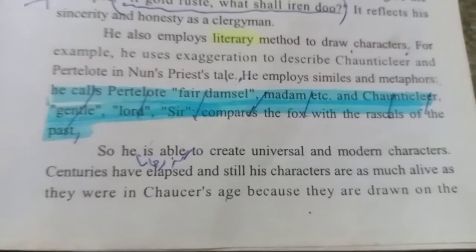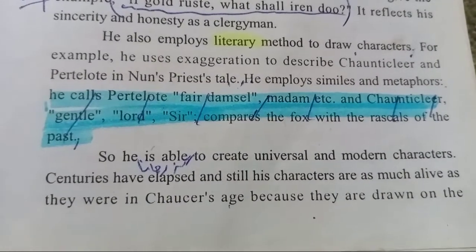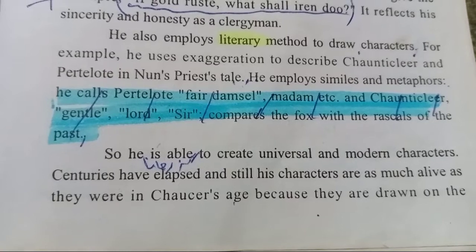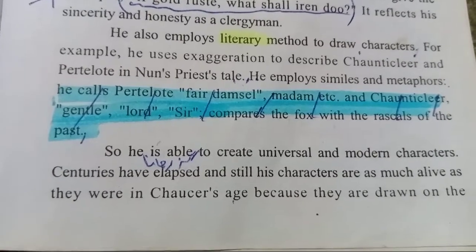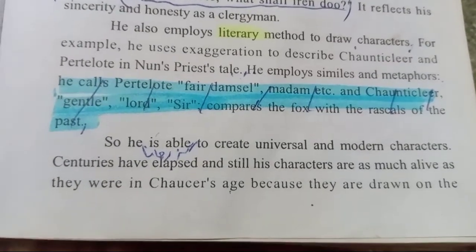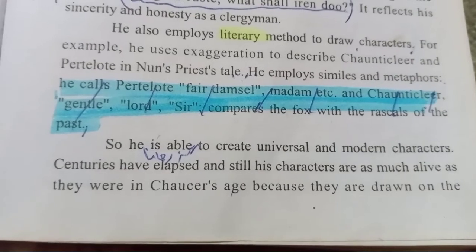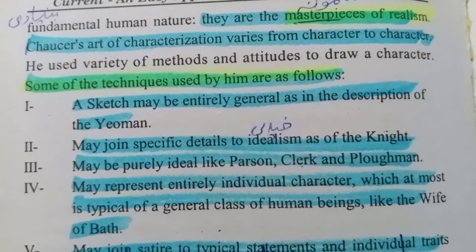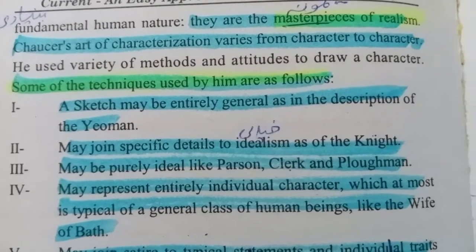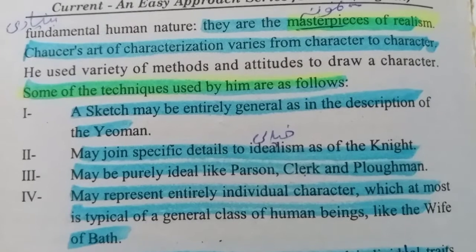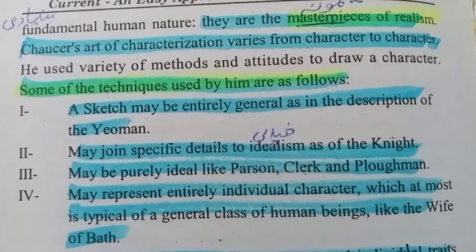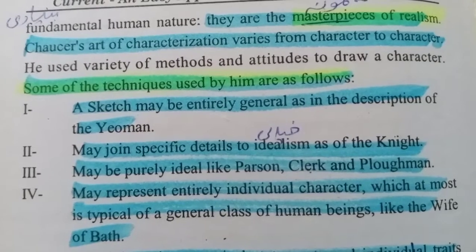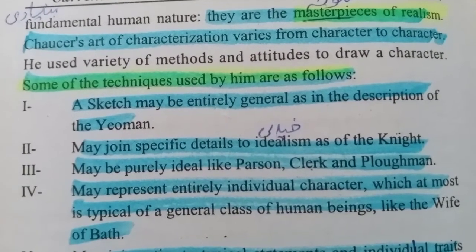So he is able to create universal and modern characters. تو وہ قابل ہو گیا ہے بین الاقوامی اور دور جدید کے کردار پیش کرنے میں. Centuries have elapsed and still his characters are as alive as they were in Chaucer's time, because they are drawn on fundamental human nature. They are the masterpiece of realism. Chaucer's art of characterization varies from character to character; he uses a variety of methods and attitudes to draw the characters.